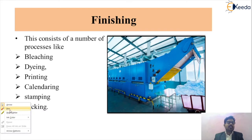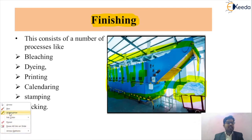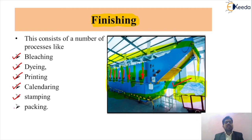The finishing process is a very important process by which we get the finished product. In the finishing process, different compartments carry out various sub-processes. The different processes included in finishing are: bleaching, dying, printing, calendaring, stamping, and finally packing, by which we get the finished product from the textile industry.